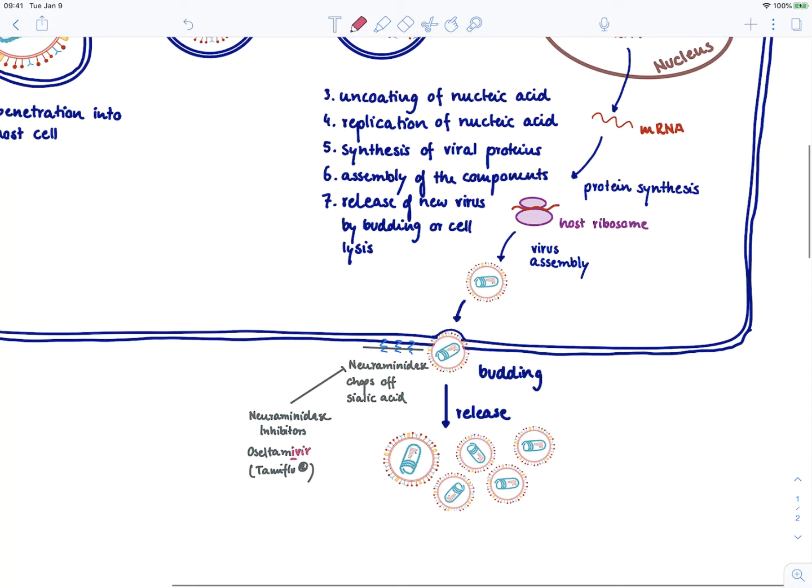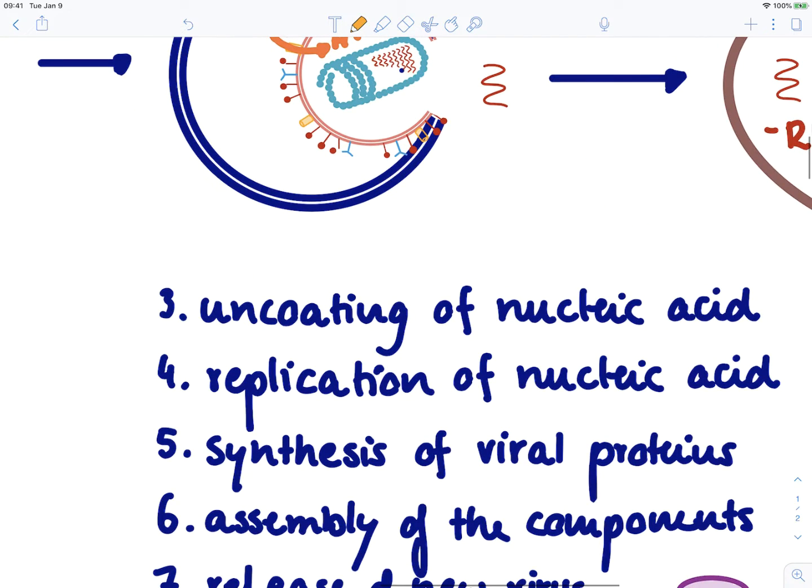There's one other drug that is on the market, it's not recommended but you can still get it and that's called amantadine. Amantadine is an M2 blocker. So it blocks this proton channel that brings in the protons which eventually are going to destroy the envelope and the capsid of the influenza virus.